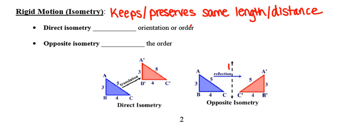Now when we're talking about rigid motions or isometries, there's really two different kinds. The first of which is called a direct isometry. And a direct isometry will either keep or preserve orientation. And again, I use those words keeps and preserves interchangeably.